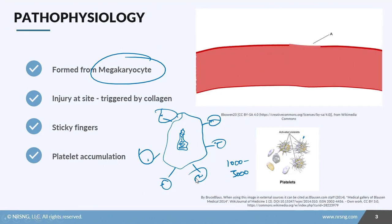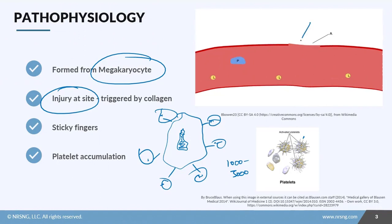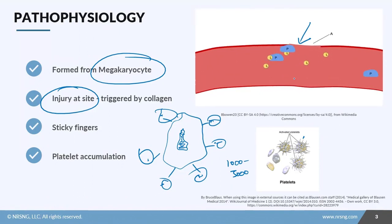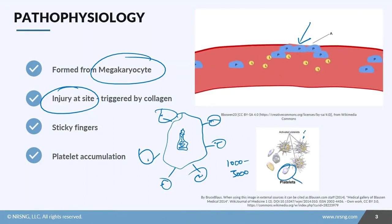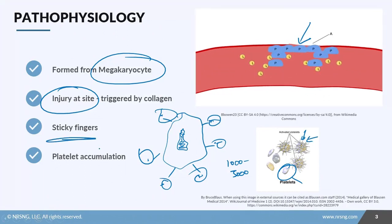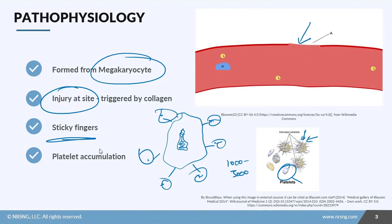A megakaryocyte can produce anywhere from 1,000 to 3,000 platelets during its lifetime, and they're all derived from the bone marrow. If you have an injury at a site — like a laceration or some sort of trauma — the collagen in the skin triggers a reaction that stimulates the platelets to come to the site. When activated, platelets grow little appendages — like sticky fingers — that help them adhere to the site better.